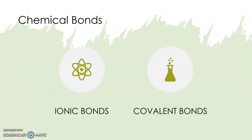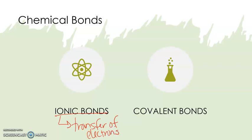When we combine these atoms into chemical compounds, there are two main ways that they can bond together: ionic bonds and covalent bonds. Ionic bonds involve a transfer of electrons, whereas in covalent bonds it's a bit more friendly — this is a sharing of electrons.